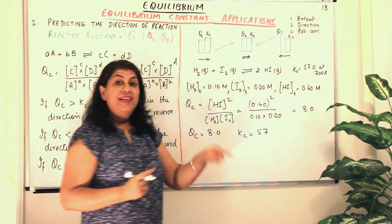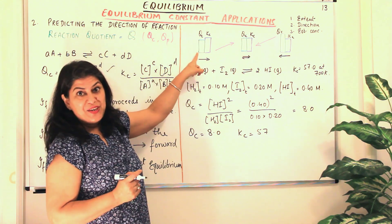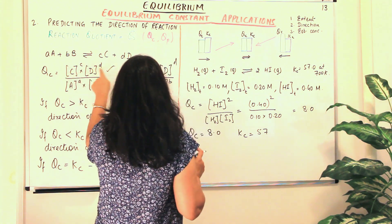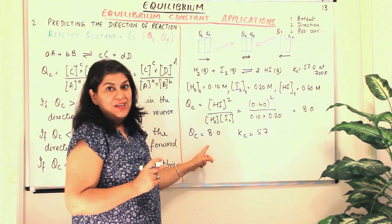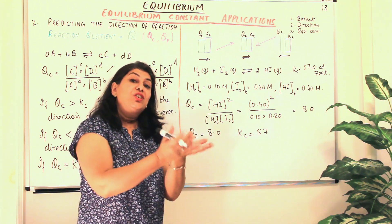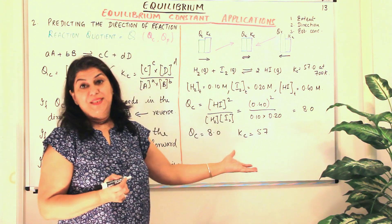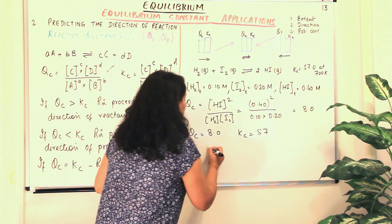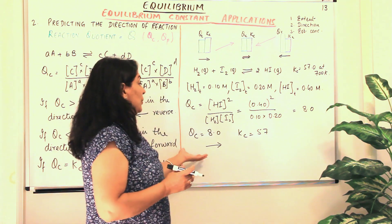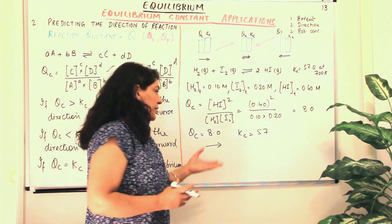Qc = 8.0 and Kc = 57, so Kc is greater than Qc. When Kc is greater than Qc, the concentration of products is less, so the reaction will proceed in the forward direction to increase the concentration of products. Therefore, this reaction proceeds in the forward direction. This is how we predict the direction of a reaction.